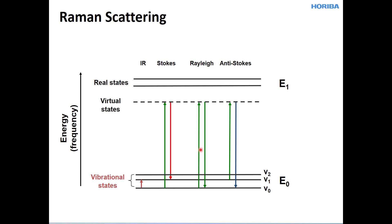However, the interaction of the molecule with a photon can bring the molecule to what's quantum mechanically described as a virtual state, where a photon can then be scattered at the same energy, frequency, and wavelength as that of the incident photon. There's no transfer of energy whatsoever — hence it's called elastic light scattering or Rayleigh scattering.